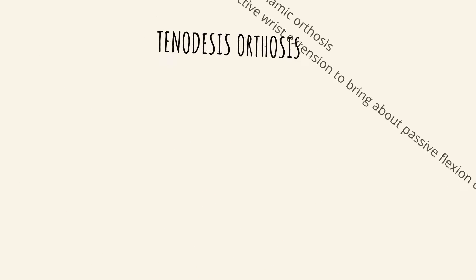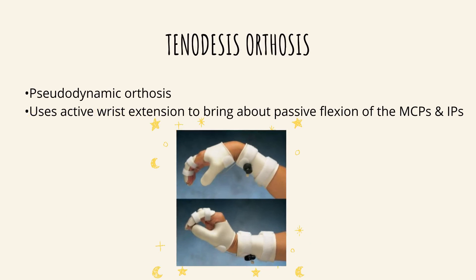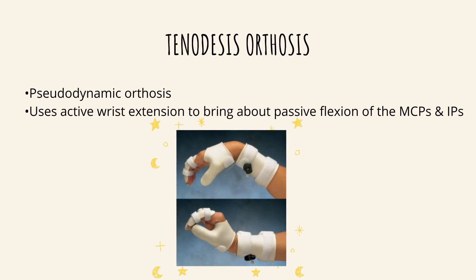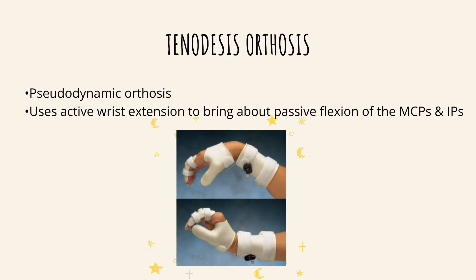Lastly is the tenodesis orthosis. This is a pseudodynamic orthosis wherein it uses active wrist extension to bring about passive flexion of the MCPs and IPs.